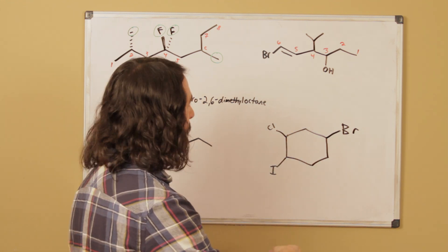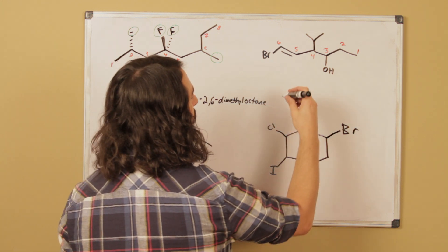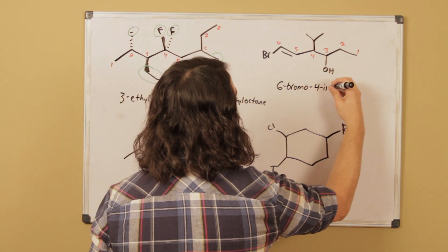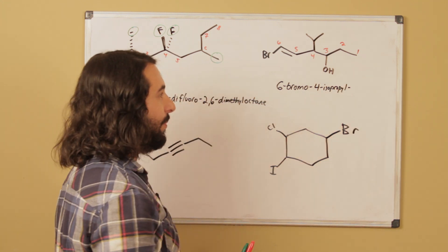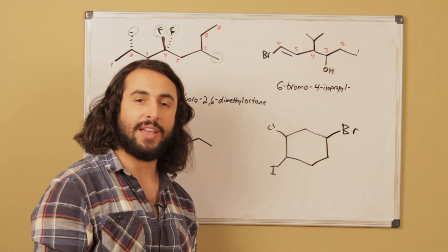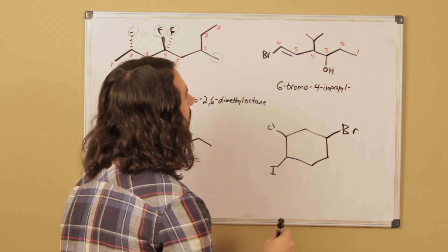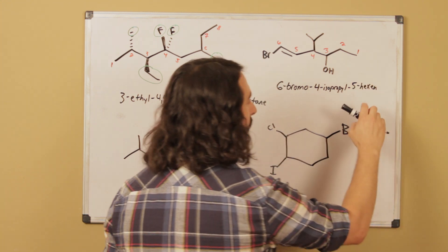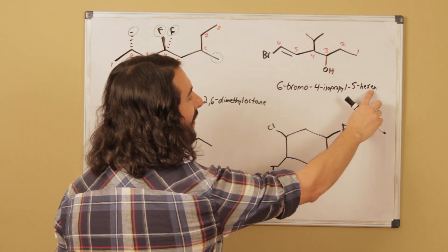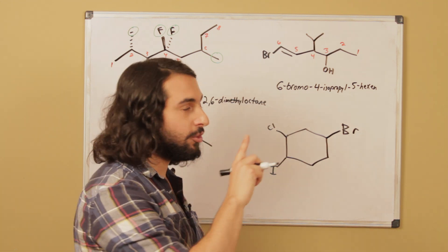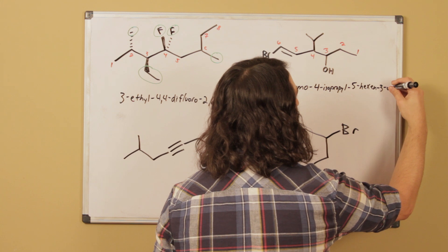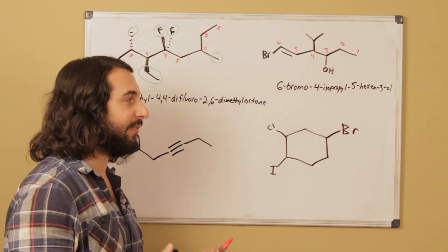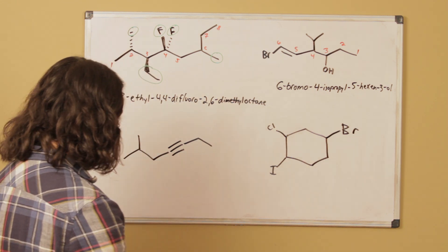We list the substituents, except for hydroxyl and alkene, because both of those modify the suffix of the molecule — we save those for the end. We have a bromo group first alphabetically: 6-bromo. Then 4-isopropyl. Now comes the tricky part: both the double bond and the hydroxyl modify the suffix. It's six carbons, so we say hex, then drop the E from 'ene' to get 'en', indicating the double bond at carbon five, then add 'ol' for the alcohol at carbon three: 6-bromo-4-isopropyl-5-hexen-3-ol.